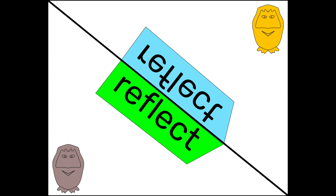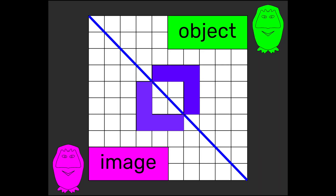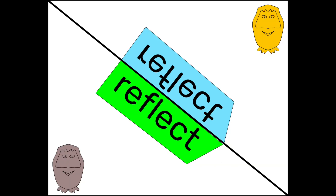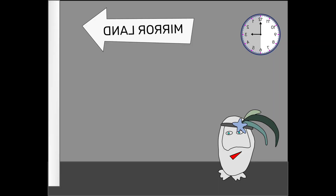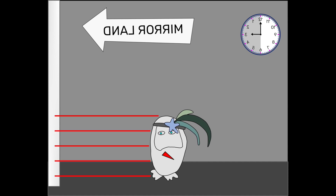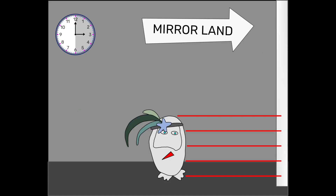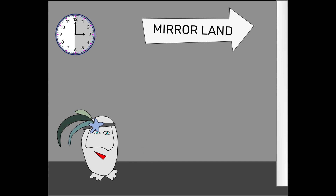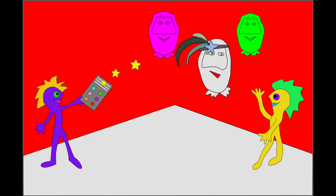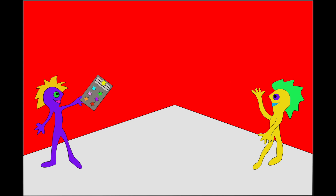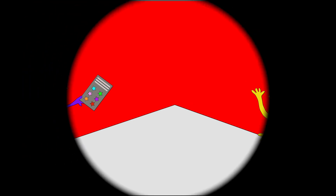Reflect, reflect, all you have to do to reflect. Keep your distance from the line the same, then don't forget to check. Reflect, reflect, all you have to do to reflect. Keep your distance from the line the same, then you'll be perfect. Keep your distance, keep your distance from the line the same, then you'll be perfect.